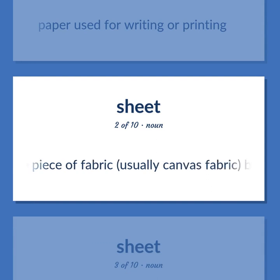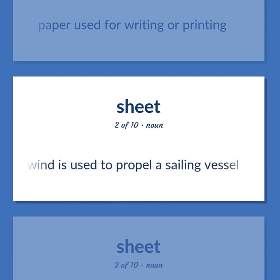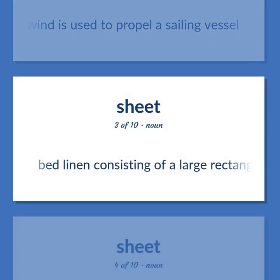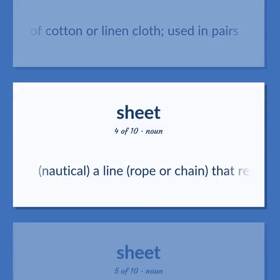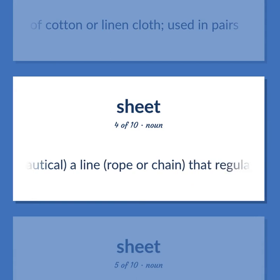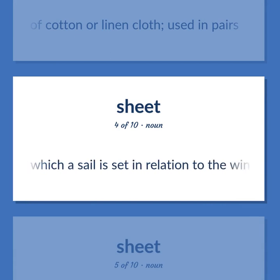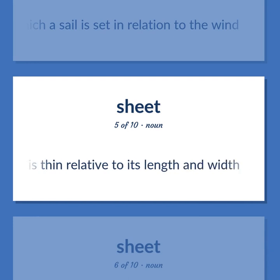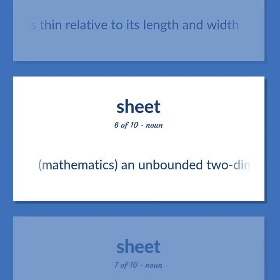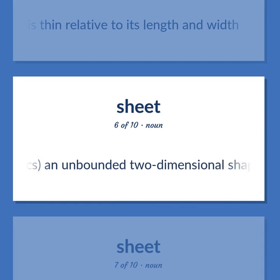Sheet (noun): A large piece of fabric, usually canvas, by means of which wind is used to propel a sailing vessel. Bed linen consisting of a large rectangular piece of cotton or linen cloth, used in pairs. Also (Nautical): a line, rope or chain that regulates the angle at which a sail is set in relation to the wind. A flat artifact that is thin relative to its length and width. In mathematics: an unbounded two-dimensional shape.